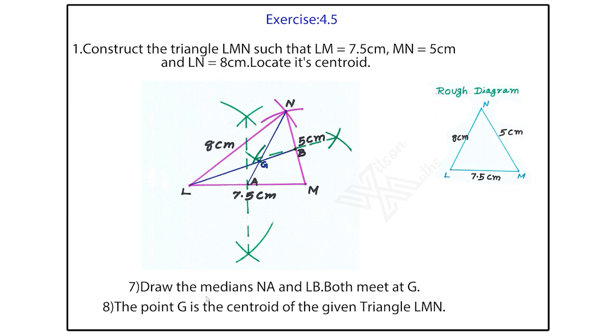Seventh step and eighth step. We can see here. Seventh step, what is that? Draw the medians NA and LB. From N, this is A. Why we are saying that is median? Middle of the LM. Middle of LM is A. From the opposite point, that is N. From N and opposite side middle point you join it. That is called median.